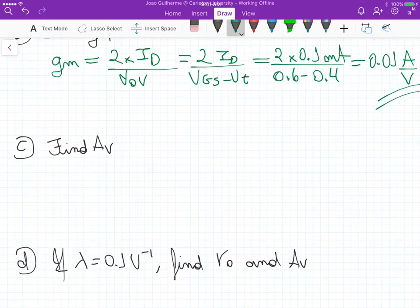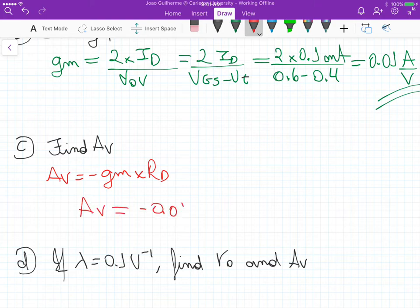For part C, we have to find the voltage gain AV. The voltage gain for this circuit is AV equals minus the transconductance times the drain resistance. That's the gain we have for this amplifier. This gives us minus 0.01 times those 10k ohms, which gives us minus 10 volts per volt.